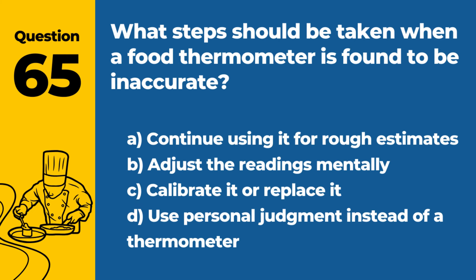Question 65. What steps should be taken when a food thermometer is found to be inaccurate? a. Continue using it for rough estimates. b. Adjust the readings mentally. c. Calibrate it or replace it. d. Use personal judgment instead of the thermometer. Answer c. Calibrate it or replace it. If a food thermometer is found to be inaccurate, it should be calibrated if possible or replaced to ensure accurate temperature readings are maintained.